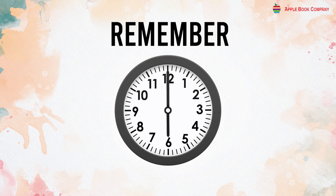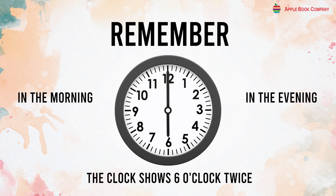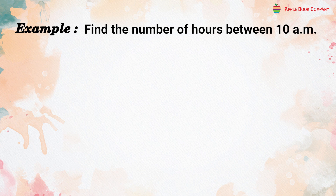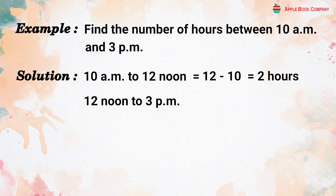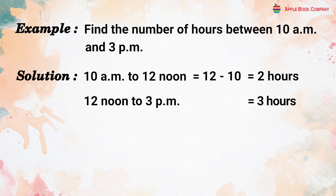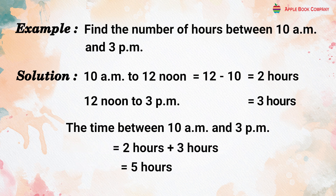For example, the clock shows 6 o'clock twice — in the morning and in the evening. We write 6 o'clock in the morning as 6 AM and 6 o'clock in the evening as 6 PM. Example: Find the number of hours between 10 AM and 3 PM. Solution: 10 AM to 12 noon = 12 − 10 = 2 hours. 12 noon to 3 PM = 3 hours. So the time between 10 AM and 3 PM = 2 hours + 3 hours = 5 hours.